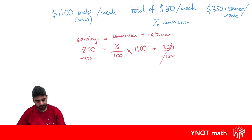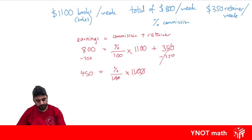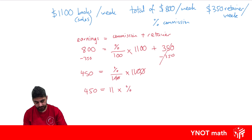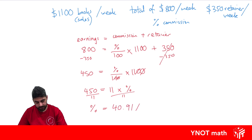We can cancel some zeros by dividing 1,100 by 100, leaving us with 450 equals 11 times the percentage. Then we divide both sides by 11, and we get our percentage being 40.91 percent.